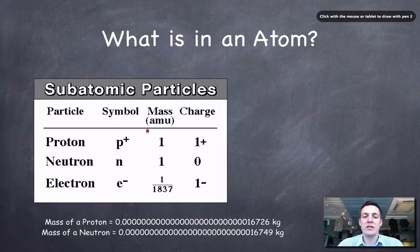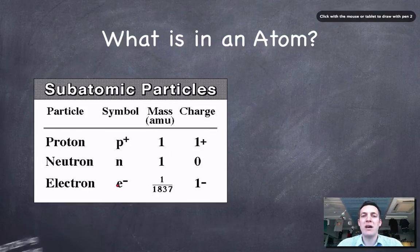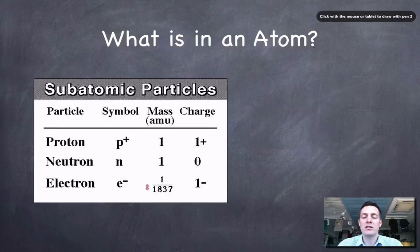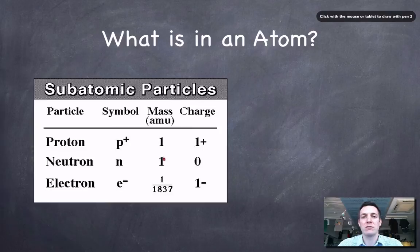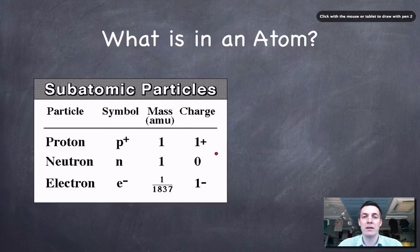And if we set their mass to one, then the electron weighs about one two-thousandth of the mass of a proton. But more precisely, it's one one-thousand-eight-hundred-and-thirty-seventh of the mass of a proton or a neutron. And all these figures are very important to remember.